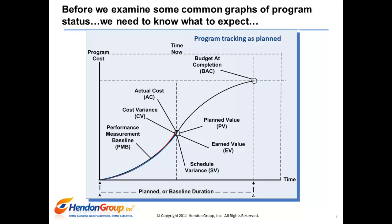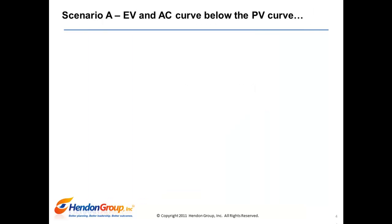This means that earned value and actual cost are equal to the planned value and show no or negligible variance. A program with this pattern would be expected to deliver on time and within the approved budget. In fact, the program may be delivered slightly under budget if delivered within the task estimates, since in this case the program would not require any management contingency funds. Now that we've set our expectations, let's look at some program scenarios.